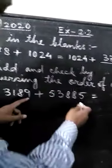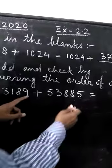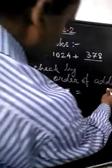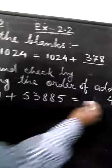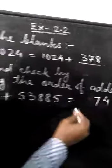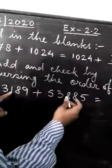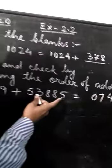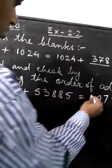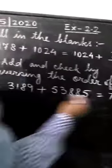Now, let us calculate the sum. 9 and 5, 14. 4, carry 1. 8 and 8, 16 and 1, 17. 7, carry 1. 8 plus 1, 9, and 1, 10. 0, carry 1. 3 and 3, 6, plus 1, 7, and then 5.